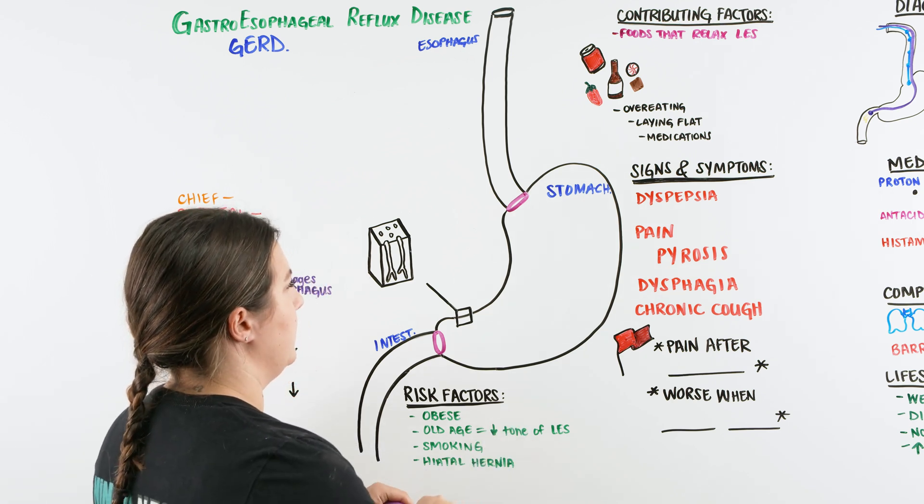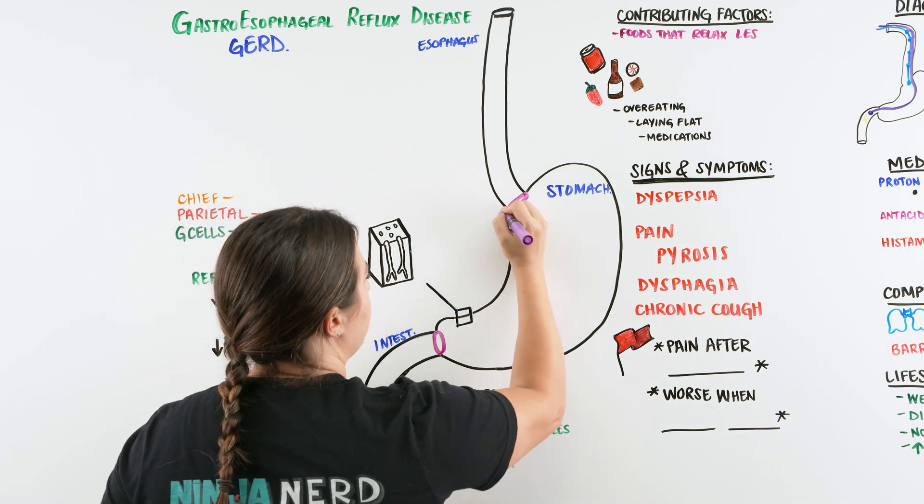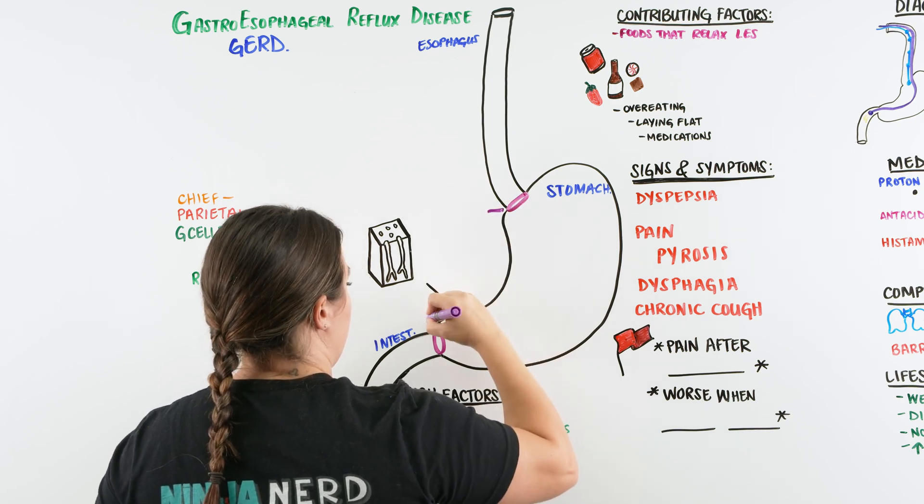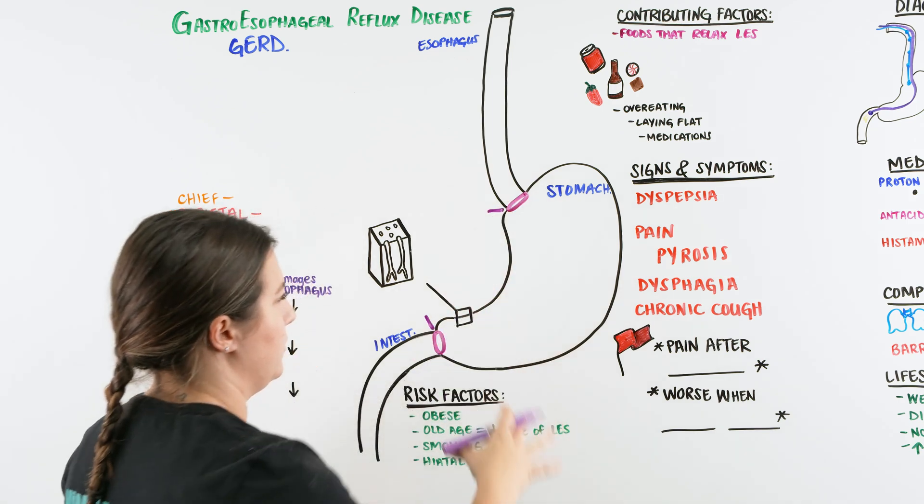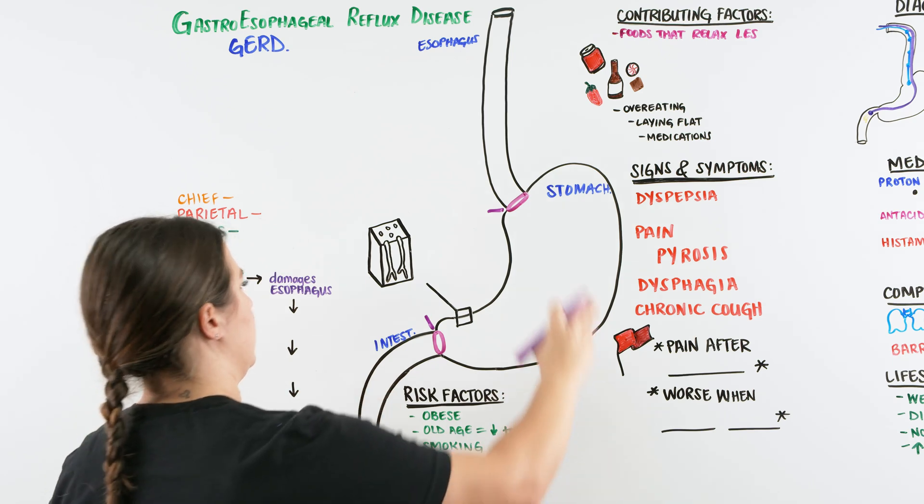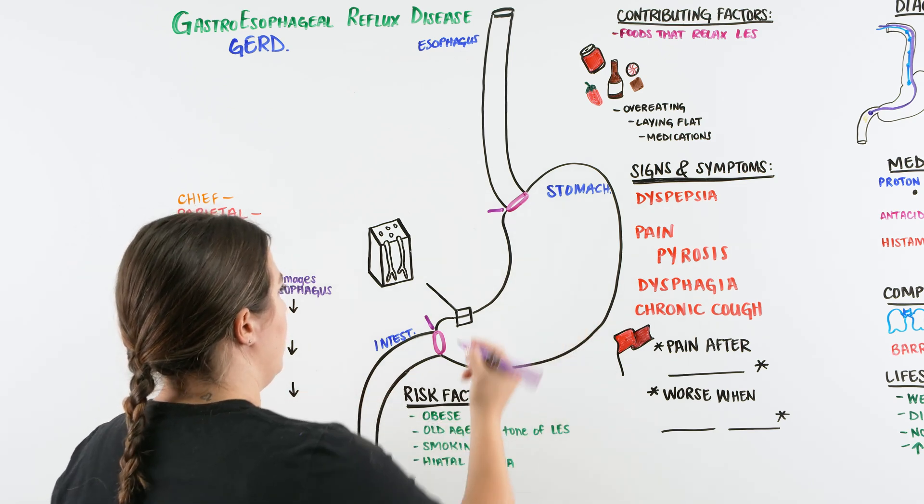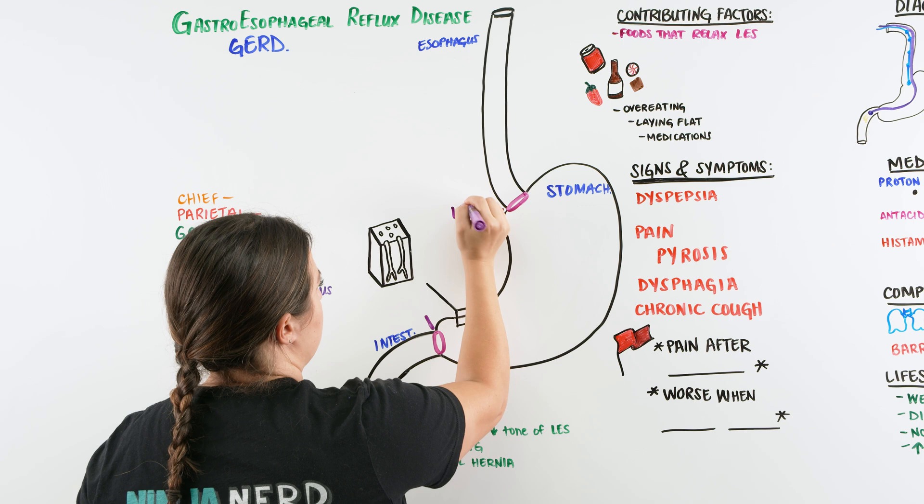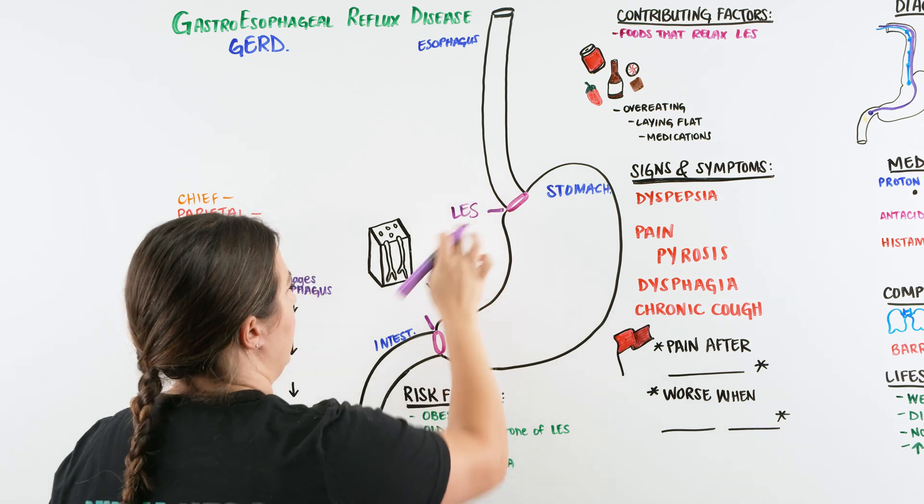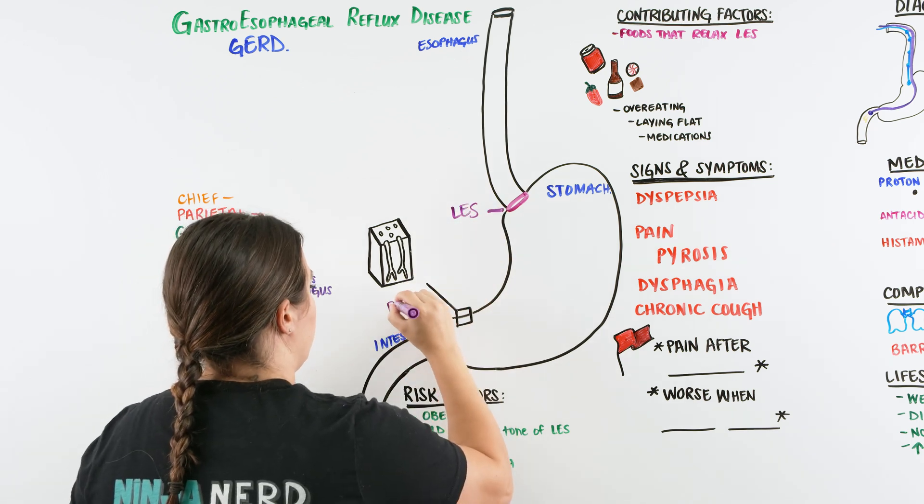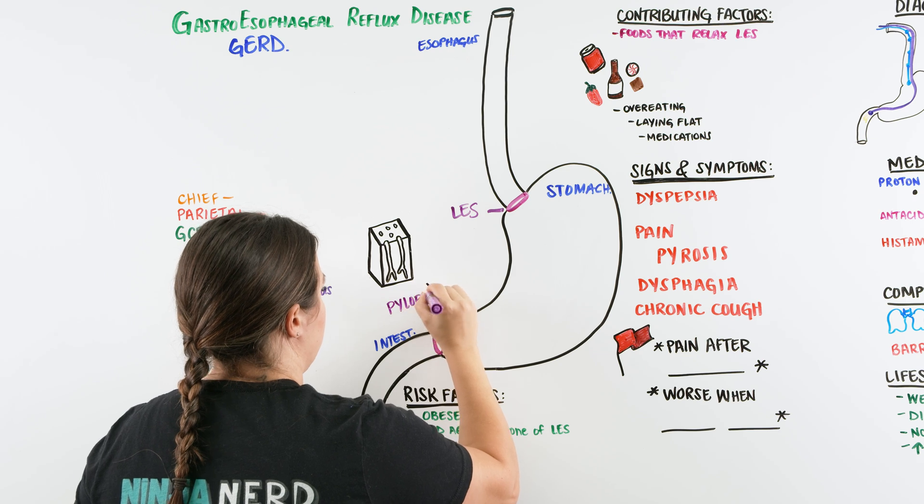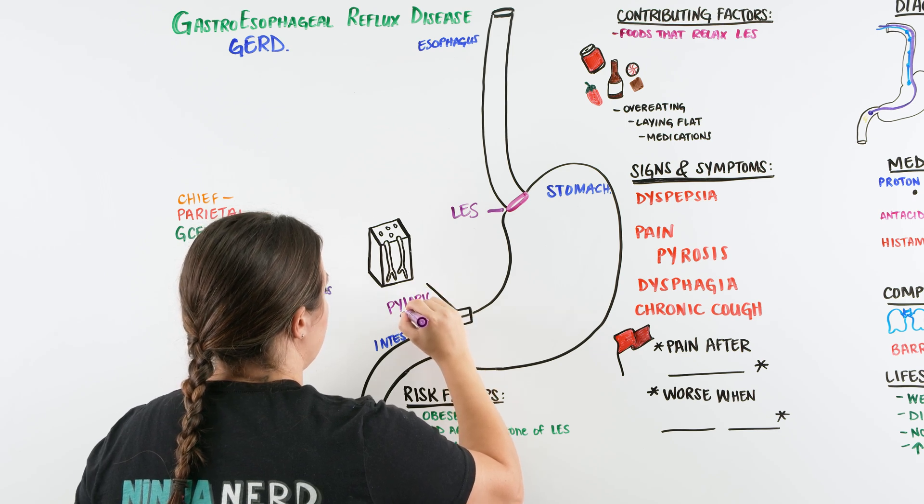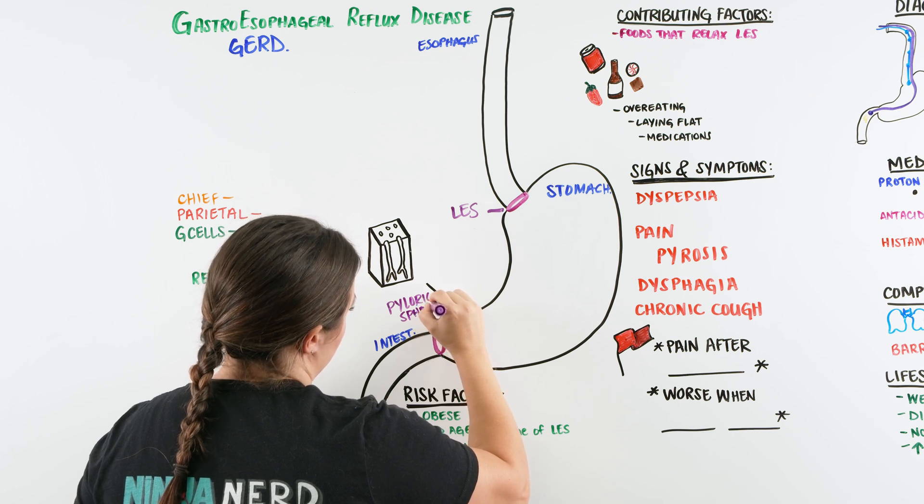There are two sphincters that we're going to talk about. I picture these sphincters as like the two doors that get us into the room of the stomach. We have the one right here, which is the lower esophageal sphincter, also abbreviated LES. And then we have the pyloric sphincter.